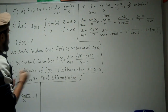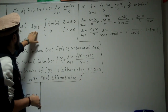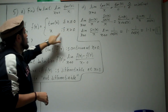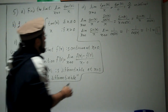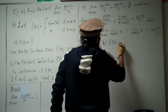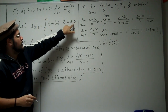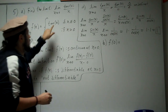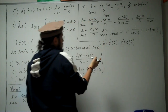Now let's do part b. They give us a piecewise function: f(x) equals tangent of x if x is less than or equal to 0, and x if x is greater than 0. They want us to compute f(0). Since the condition x ≤ 0 includes 0, we use the tangent branch. So f(0) equals tangent of 0.